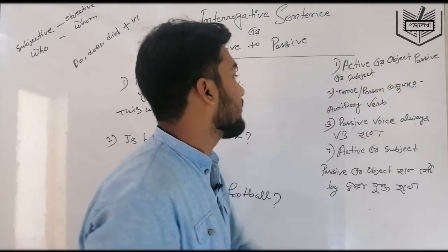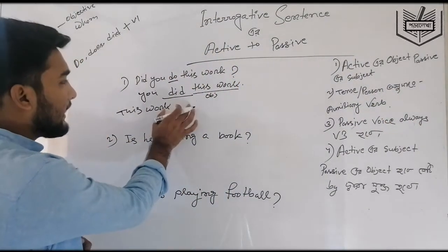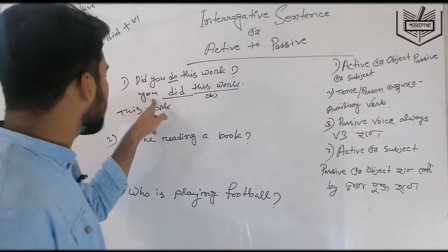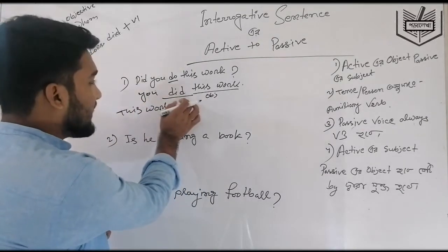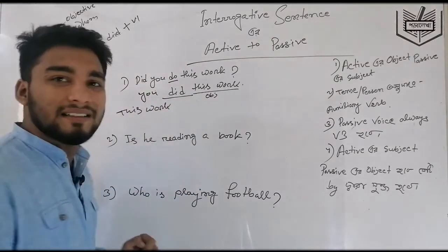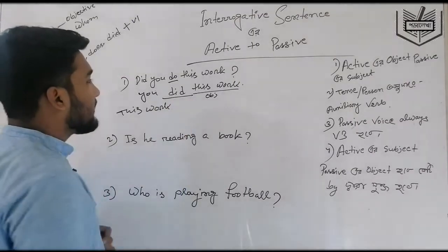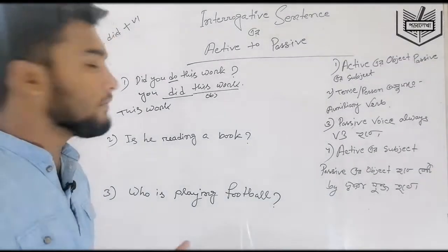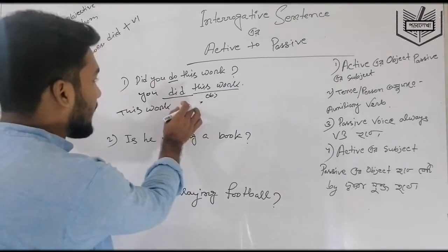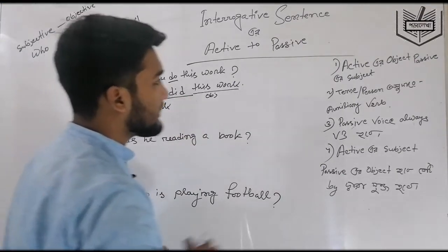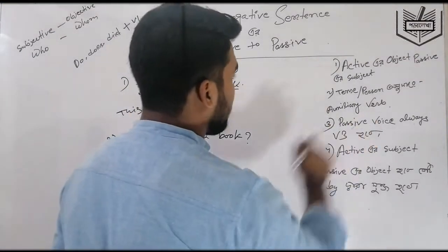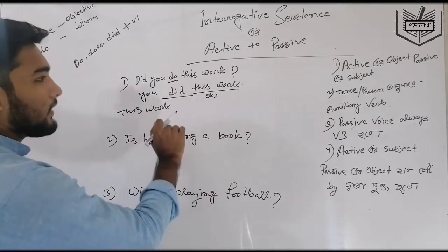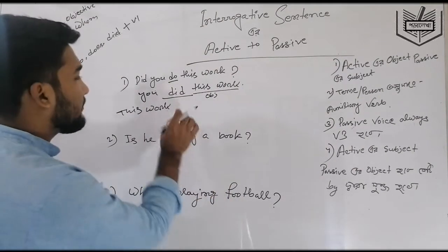The sentence is past indefinite. For past indefinite, normally V2 — the past form — is used in active. In passive, we identify the auxiliary. The tense is past indefinite, and the passive auxiliary 'was' or 'were' is used accordingly based on person and number.